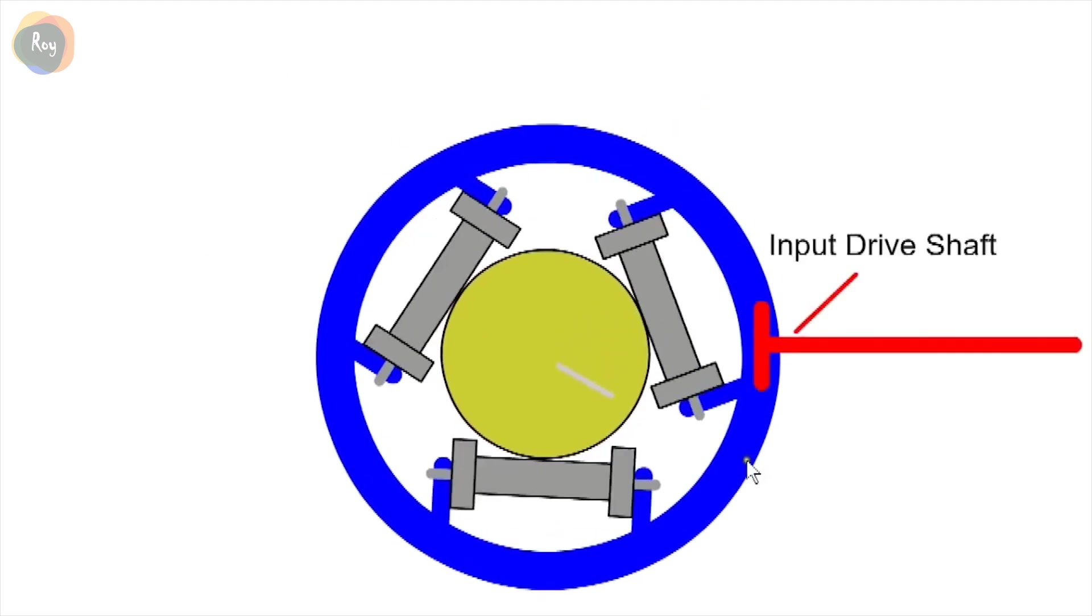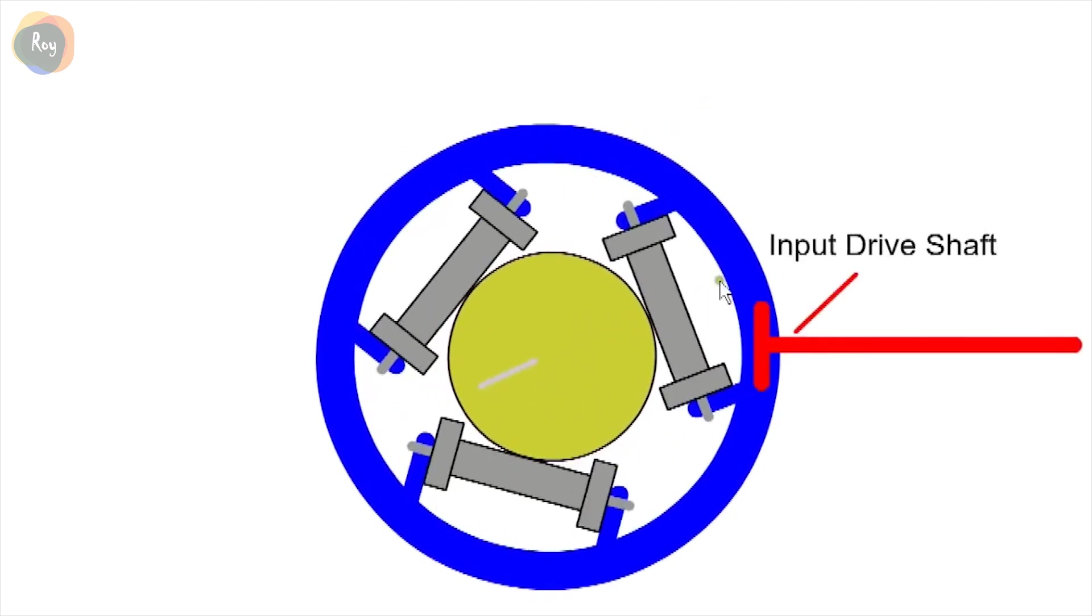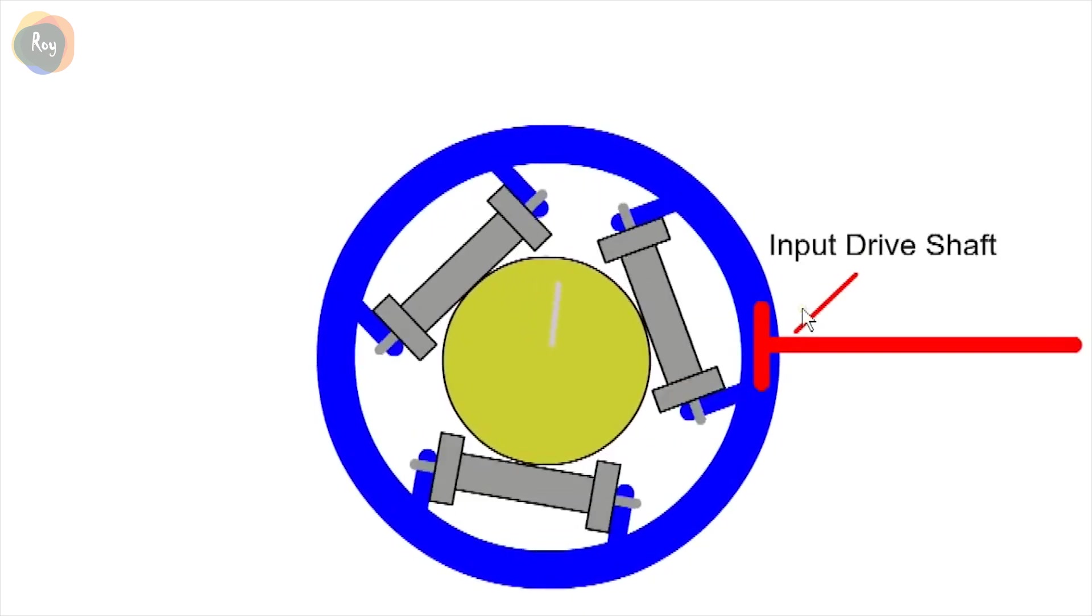When travelling in a straight line, the crown gear rotates and drives both half shafts at the same speed via the worms.